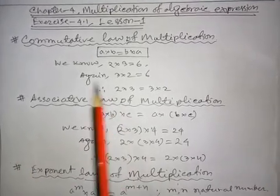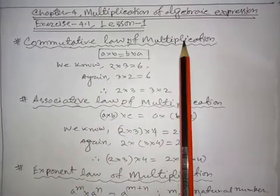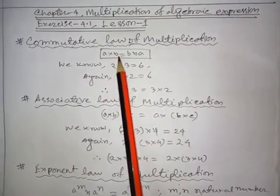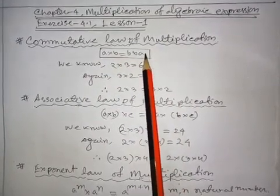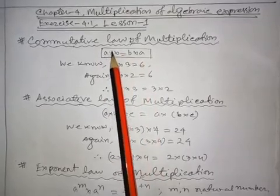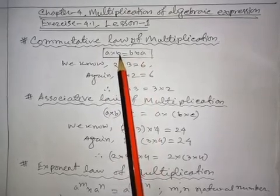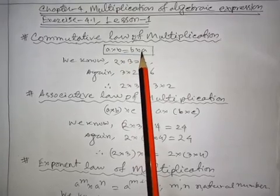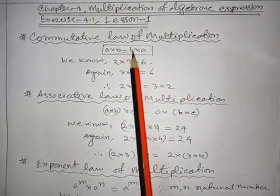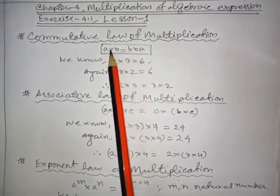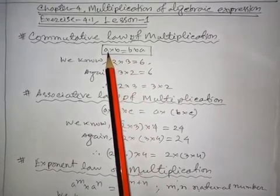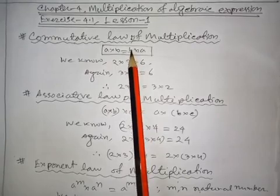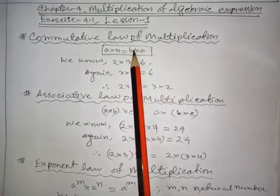The first law is the Commutative Law of Multiplication. What is the commutative law of multiplication? A multiplied by B equals B multiplied by A. Here A is the multiplicand and B is the multiplier. If we change the position of the multiplier and multiplicand, the product will always be the same.